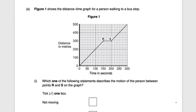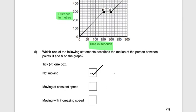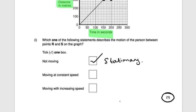Final question: figure one shows a distance-time graph for a person walking to a bus stop. Which statement describes the motion of the person between points R and S? Since this is a distance-time graph, a flat line indicates stationary. Between points R and S the line is flat, so the person is not moving — stationary. That is worth one mark. Thanks for watching — please subscribe, hit the like button and the notification bell.